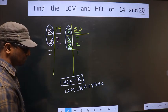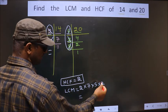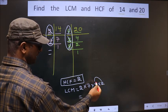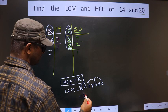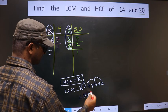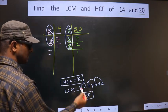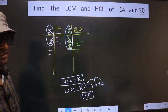So let us multiply. That is 2 into 5, 10. 10 into 7, 70. 70 into 2, 140. So this is our LCM and this is our HCF.